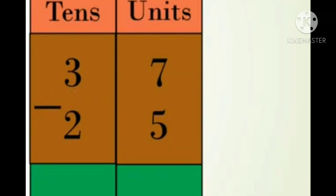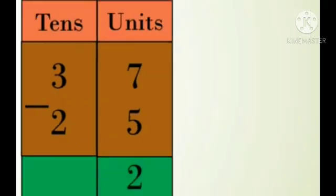Next example: 37 minus 25 is equal to how much? Here we have to subtract 25 from 37. So here, 7 minus 5 is equal to how much? Yes, 7 minus 5 is equal to 2.